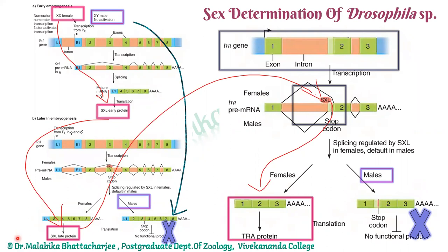To summarize the pathway so far: in females, we have the numerator-numerator transcription factor, SXL early protein, SXL late protein, and tra protein. In males, no protein product has been produced at all — no numerator-numerator transcription factor, no SXL early or late protein, and no tra protein.